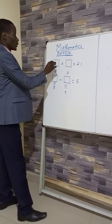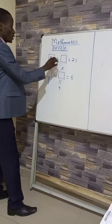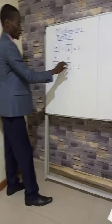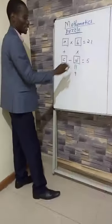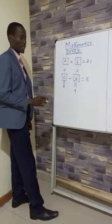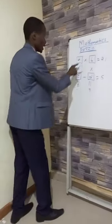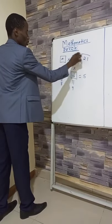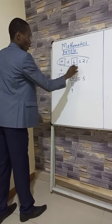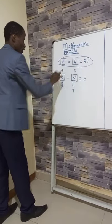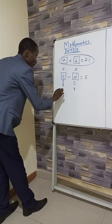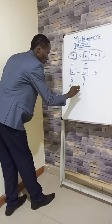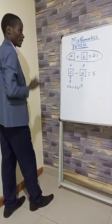So we let the value here to be A. We let the value here to be B. We let the value here to be C, and we let the value here to be D. So where do we start from? A multiplied by B is equal to 21. That is the first step.